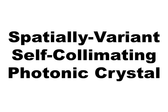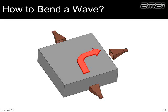Now I want to show some of what we're doing with this. The first is spatially variant self-collimating photonic crystals. Our goal is to take a block of photonic crystal and flow energy around a bend — instead of shining energy in from the bottom right and having it go straight through, we want it to come out the upper right side rather than the upper left. We're going to use self-collimation to do that.